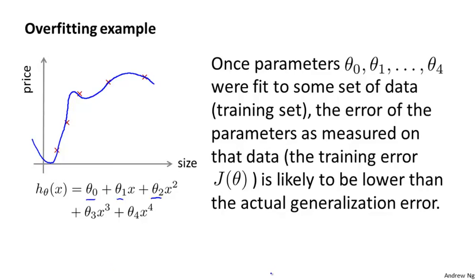The more general principle is that once your parameters were fit to some set of data — maybe the training set or maybe something else — then the error of your hypothesis as measured on that same data set, such as the training error, is unlikely to be a good estimate of your actual generalization error — that is, how well the hypothesis will generalize to new examples.